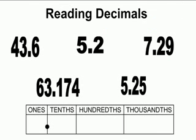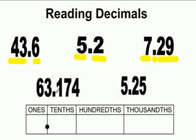Now when you read decimals, let's read the first one. This is forty-three and six-tenths. Five and two-tenths. Seven and twenty-nine hundredths. Sixty-three and one hundred and seventy-four thousandths. And five and twenty-five hundredths.